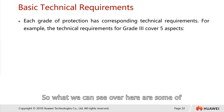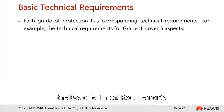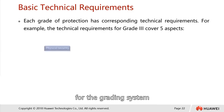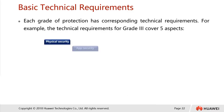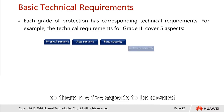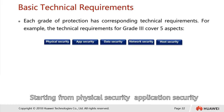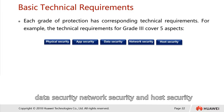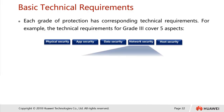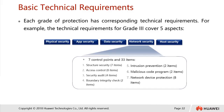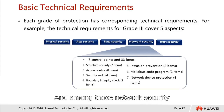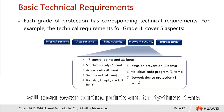What you can see here are some of the basic technical requirements for the grading system. There are five aspects to be covered: physical security, application security, data security, network, and host. Among those, network security covers seven control points and 33 items.